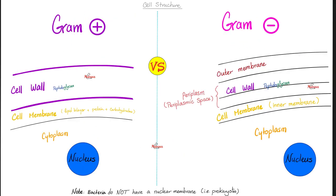Let's review gram-positive versus gram-negative. Gram-positive: very thick cell wall made of peptidoglycan plus teichoic acid, followed by a single cell membrane — a lipid bilayer with proteins and carbohydrates. This is where you find the enzymes for making the cell wall and the penicillin binding protein. Then cytoplasm and nucleus. Gram-negative: outer membrane with LPS and porins, an inner cell membrane just like gram-positive, but uniquely has a periplasmic space between the outer and inner membranes where the peptidoglycan sits. No teichoic acid, but yes to LPS.